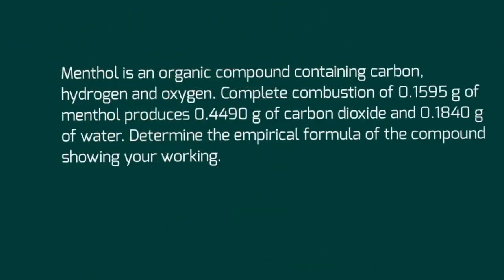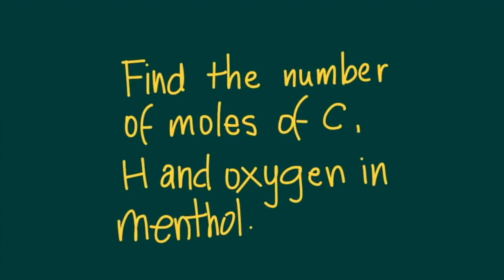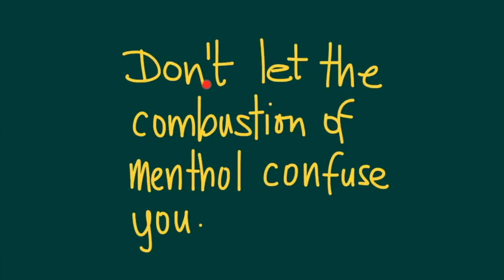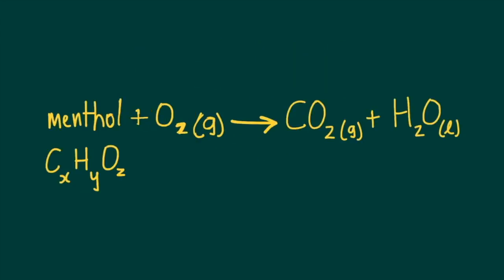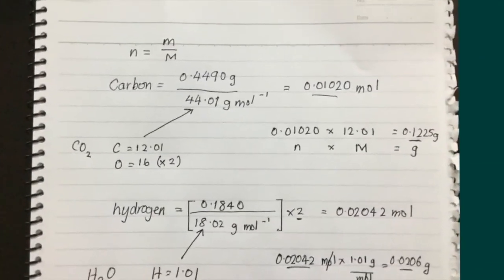Now we're ready to look at this question. Menthol is an organic compound containing carbon, hydrogen, and oxygen. Complete combustion of 0.195 grams of menthol produces a given amount of carbon dioxide and water. We need to determine the empirical formula of the compound. You should not let the fact that menthol is combusted in oxygen confuse you — menthol burns in oxygen producing CO₂ and water, and has a general formula containing C, H, and O.